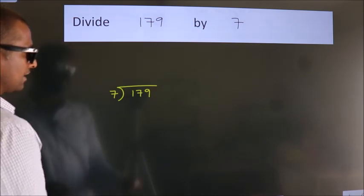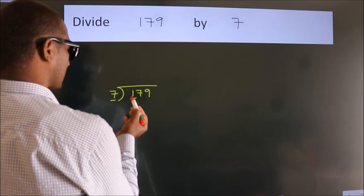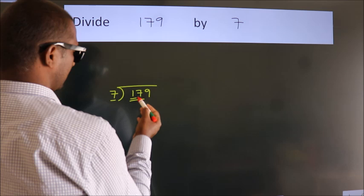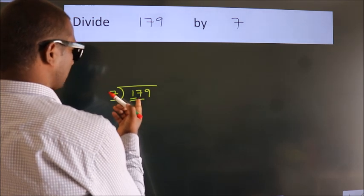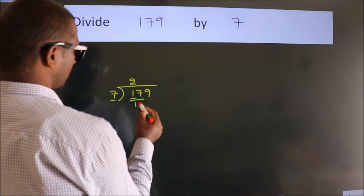Next, here we have 1, here 7. 1 is smaller than 7, so we should take two numbers: 17. A number close to 17 in the 7 table is 7 twos, 14.